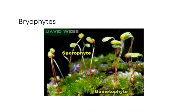Here's a picture of the sporophyte and the gametophyte. The gametophyte is what we think of when we think of moss. The sporophyte looks like these little structures — almost like little eyes — watching us.